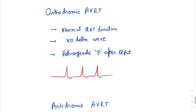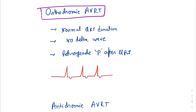Now let's see the ECG of orthodromic AVRT. In orthodromic AVRT, the impulse travels from the SA node to the AV node, then downward, then back up through the accessory pathway. Because the impulse travels down through the AV node, the QRS duration will be normal, there will be no delta wave, and there will be a retrograde P wave just after the QRS complex.